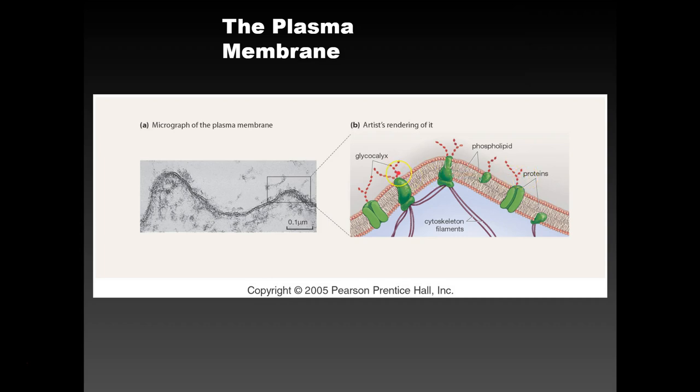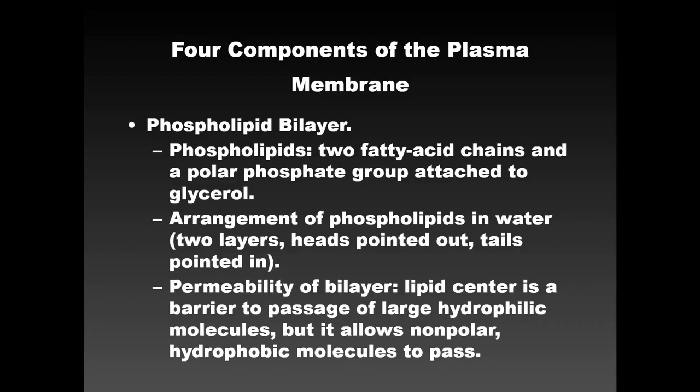The glycocalyx, by the way, is also partially carbohydrate. So pretty much everyone except nucleic acids is getting in on the plasma membrane party. There are four basic components of the plasma membrane. We'll start with the phospholipid bilayer: it's two fatty acid chains and a polar phosphate group attached to a glycerol. The heads are pointed out and the tails are pointed in. The heads like water; the tails do not.